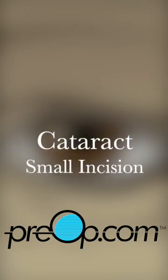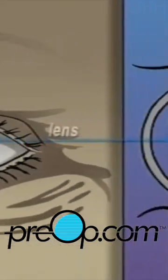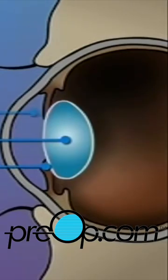Your doctor has recommended that you undergo lens replacement surgery to treat a cataract. The human eye is constructed like a camera with a clear lens in the front. The lens is located just behind the iris. It is contained in an elastic capsule. This capsule will serve as the housing for the new lens.